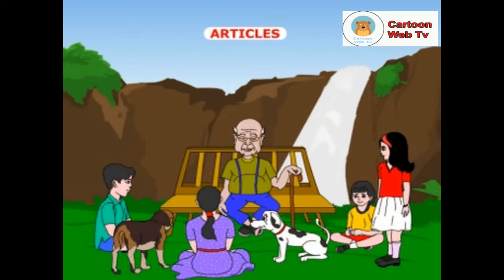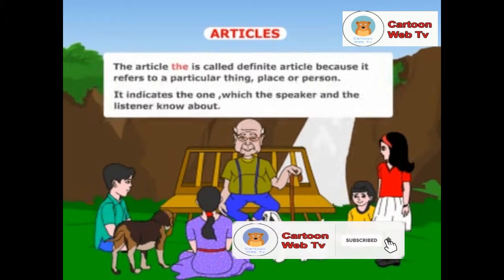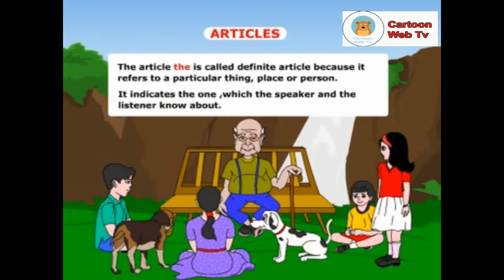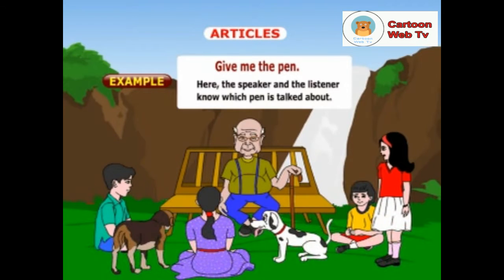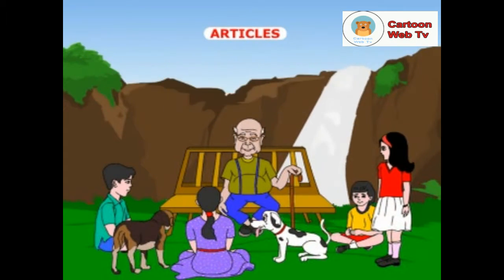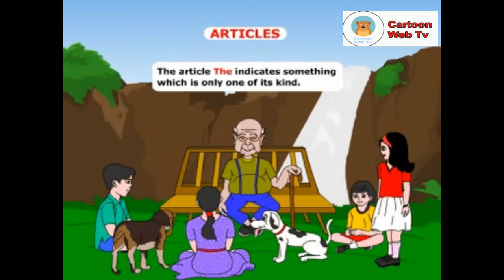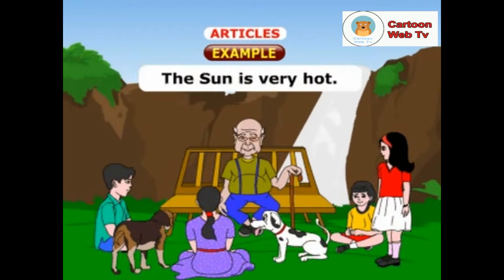Well, who is going to tell about the article the? It is me, Grandpa. The article the is called a definite article because it refers to a particular thing, place or person. It indicates the one which the speaker and the listener know about. For example, look at this sentence: give me the pen. Here, the speaker and the listener know which pen is talked about. Also, the article the indicates something which is only one of its kind. Example: the sun is very hot.